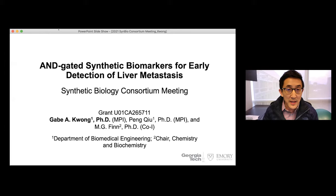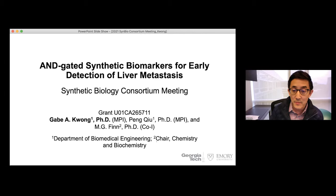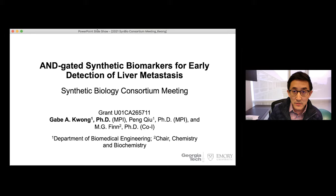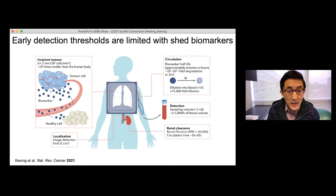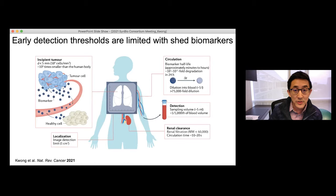Our team is from Georgia Tech and Emory. I'm speaking on behalf of Pung Chu, who's also MPI, as well as Dr. M.G. Finn, chair of Chemistry and Biochemistry at Georgia Tech. Our project is focused on early detection of cancer with AND-gated synthetic biomarkers. The context of early detection is that we're thinking about tumors that are currently very difficult to detect — below the limit of detection of imaging — typically in situ tumors that are several millimeters in diameter.